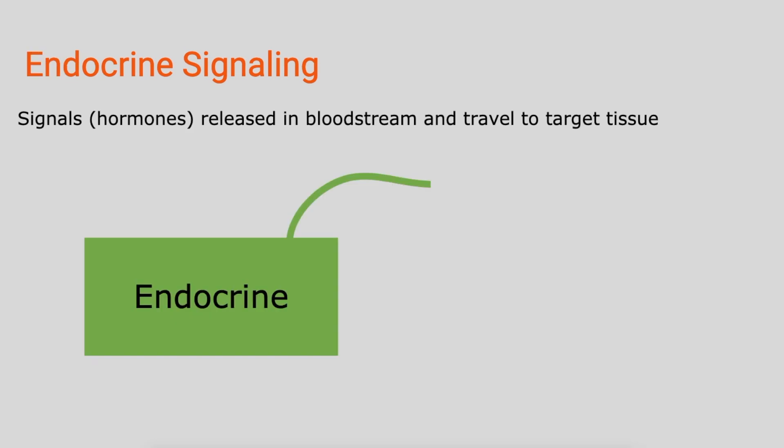In endocrine signaling, we get the signals, which are known as hormones, that are released in the bloodstream, and they're going to travel to a target tissue. So that signal is going to go through the blood and get to whatever tissue it's needed at.